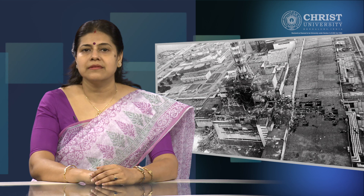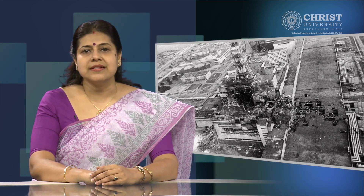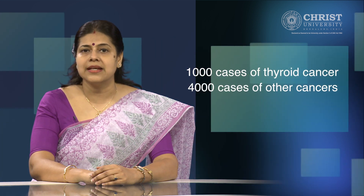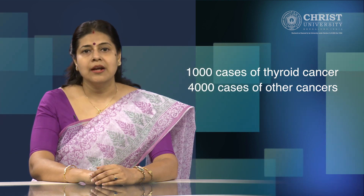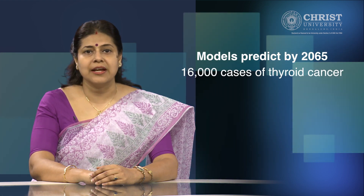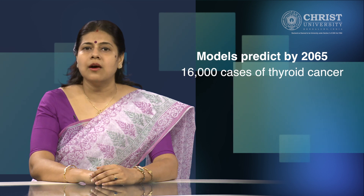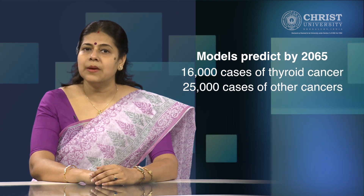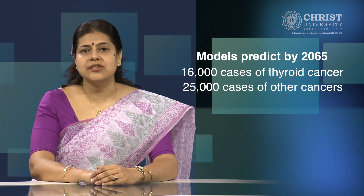This image shows how the reactor looked after the explosion. Risk projections suggest that by now, Chernobyl may have caused about 1,000 cases of thyroid cancer and 4,000 cases of other cancers in Europe as a result of the accident. Models predict that by 2065, about 16,000 cases of thyroid cancer and 25,000 cases of other cancers may be expected due to radiation from the accident.